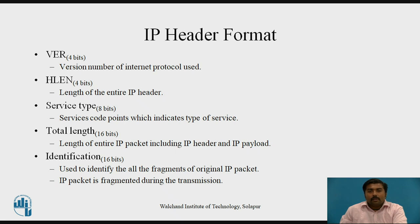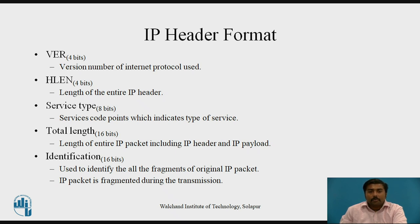The first field in the IP header is the version field, which is 4 bits. It tells which version of the protocol you are using. The next field is the header length, also 4 bits, which tells the length of the entire IP header. Next is the service type field, which is 8 bits, indicating the type of service used by the protocol. The total length field is 16 bits and tells the length of the entire IP packet including the IP header and IP payload.